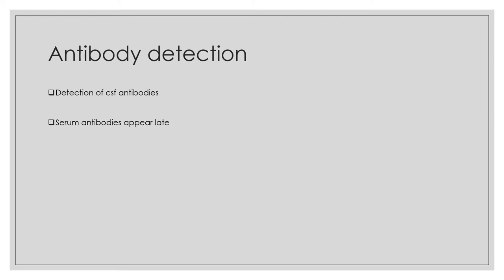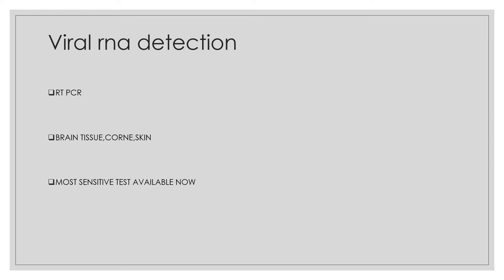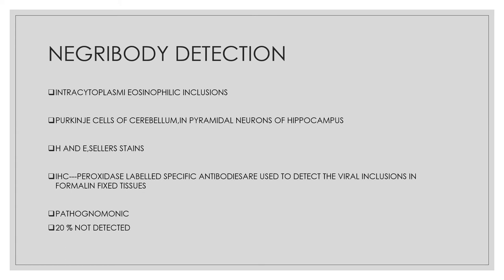Antibody detection formats include the mouse neutralization test (MNT), rapid fluorescent focus inhibition test, and fluorescent antibody virus neutralization, using glycoprotein or nucleoprotein antigens. The RT-PCR test, using samples from brain tissue, cornea, or skin to amplify genes coding for nucleoprotein or structural protein, is the most sensitive test for diagnosing rabies.